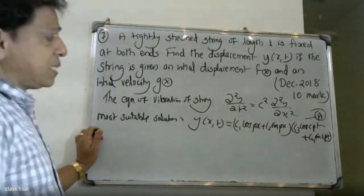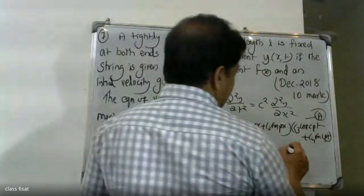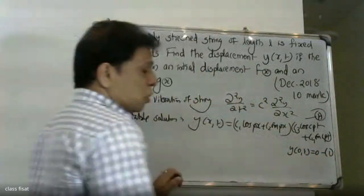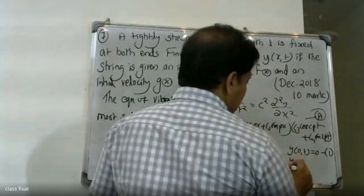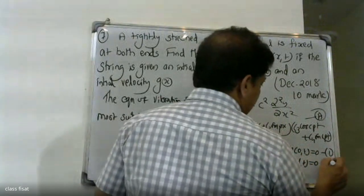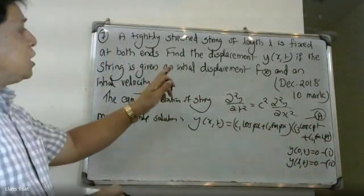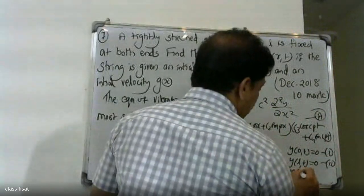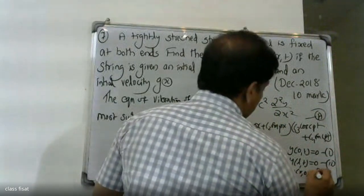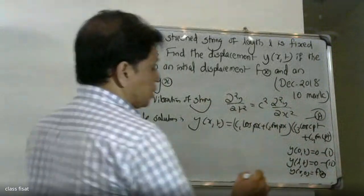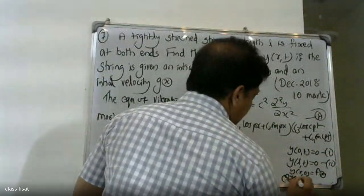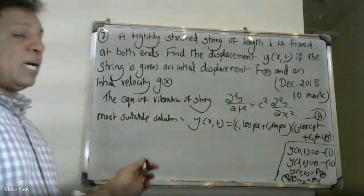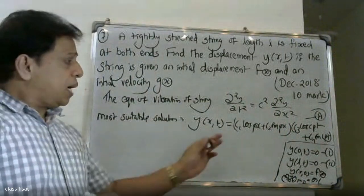Applying the boundary conditions one by one. The boundary conditions are: Y(0, t) = 0, and Y(L, t) = 0 as the string is fixed at both ends. The initial conditions are Y(x, 0) = f(x) for initial displacement, and ∂Y/∂t at t=0 equals g(x) for initial velocity.